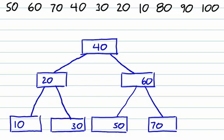The next value we insert, 80. Well, 80 is greater than 40, which means it's going to be on this side of the tree. 80 is greater than 60, which means it's going to be in this child. Since we're always inserting into a leaf node, we found our way down to a leaf node, and there's room in this leaf node, so we can simply add 80 to this existing node of the tree.